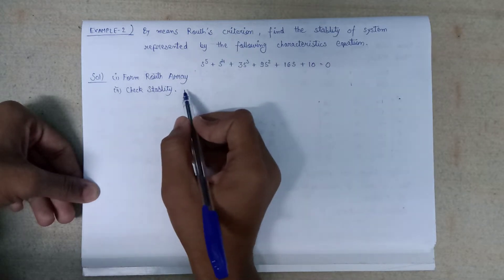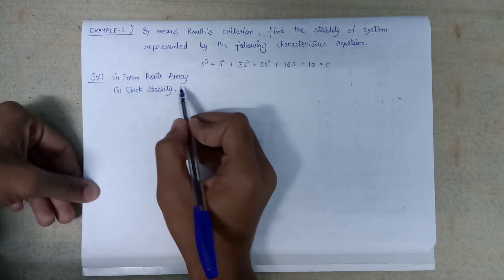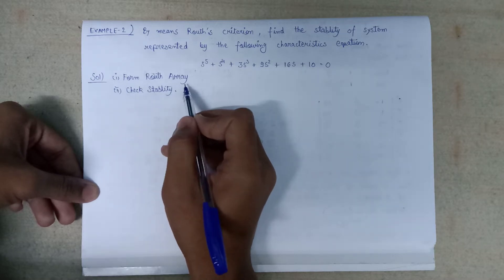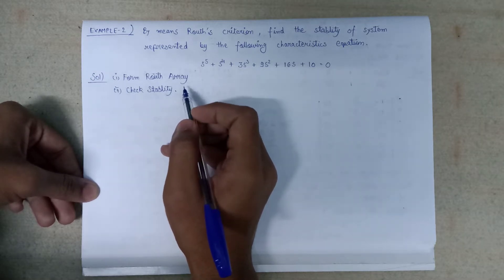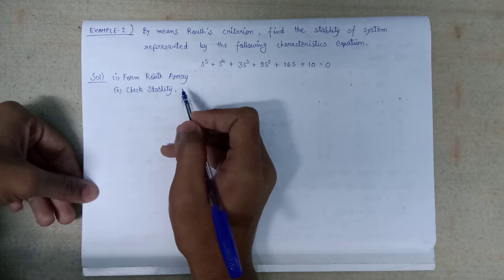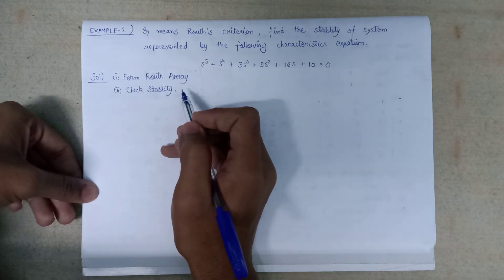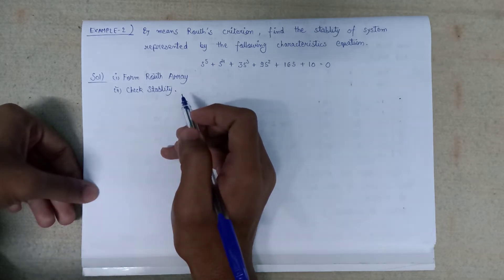What we need to do in this question is, first of all, perform a Routh array, and after that, based on the number of sign changes in the first column, we will check whether the system is stable or not.